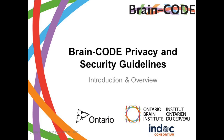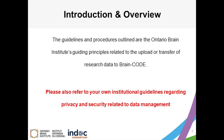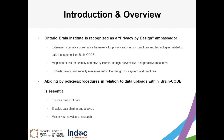Introduction and Overview to BrainCode Privacy and Security Guidelines. The guidelines and procedures outlined are the Ontario Brain Institute's guiding principles related to the upload or transfer of research data to BrainCode. Please also refer to your own institutional guidelines regarding privacy and security related to data management. OBI is recognized as a privacy-by-design ambassador in virtue of its extensive informatics governance framework, privacy and security practices, and technologies related to data management on BrainCode. This designation refers to the mitigation of privacy and security risks through a proactive and preventative approach, embedding privacy and security measures into the design of its systems and practices. A number of documents related to privacy and BrainCode are available on the BrainCode website, including the informatics governance policies and security policies, as well as information on the Getting Started and Frequently Asked Questions pages.